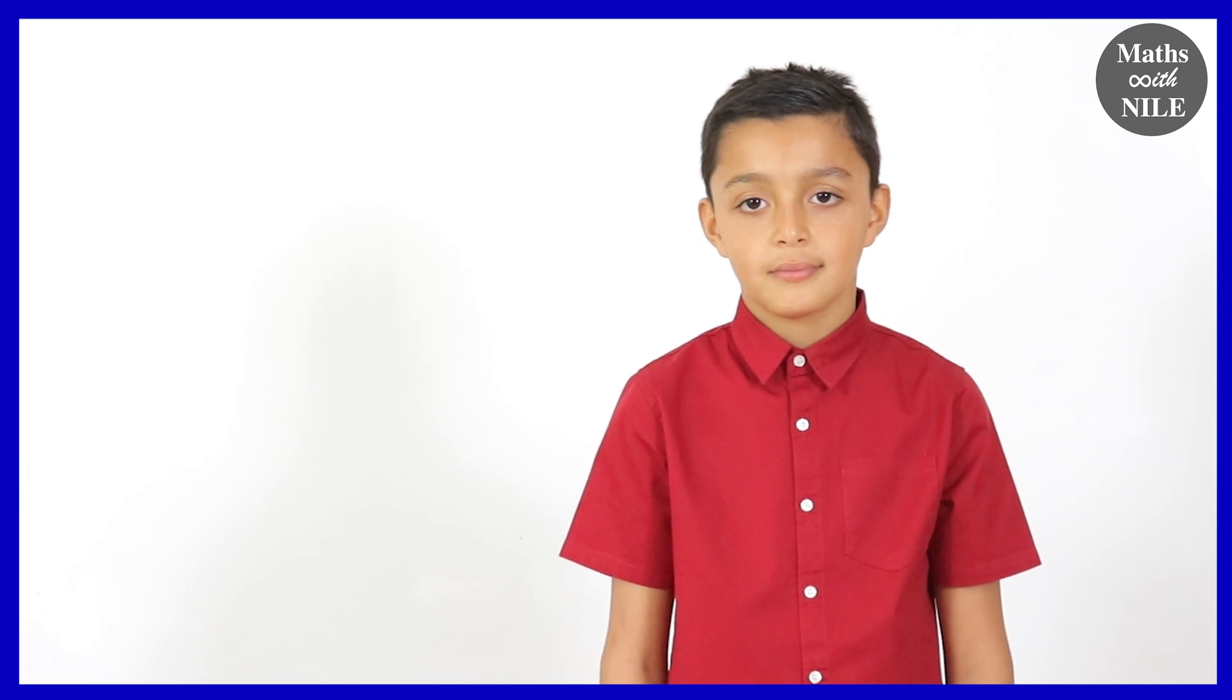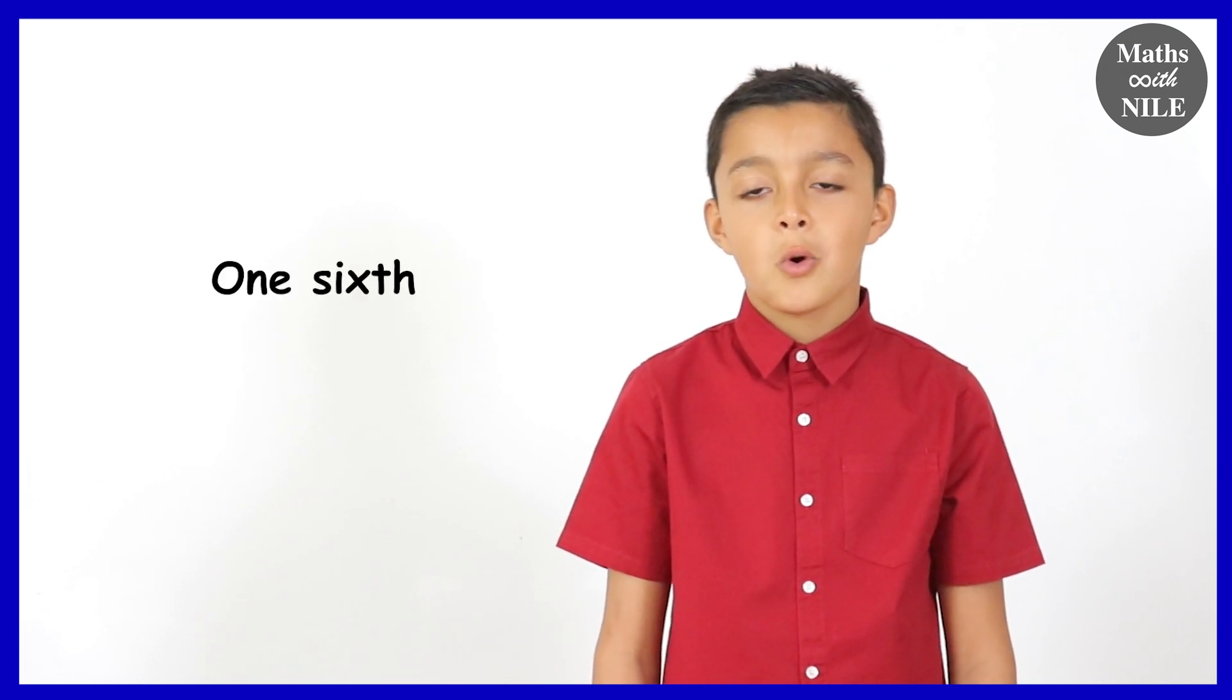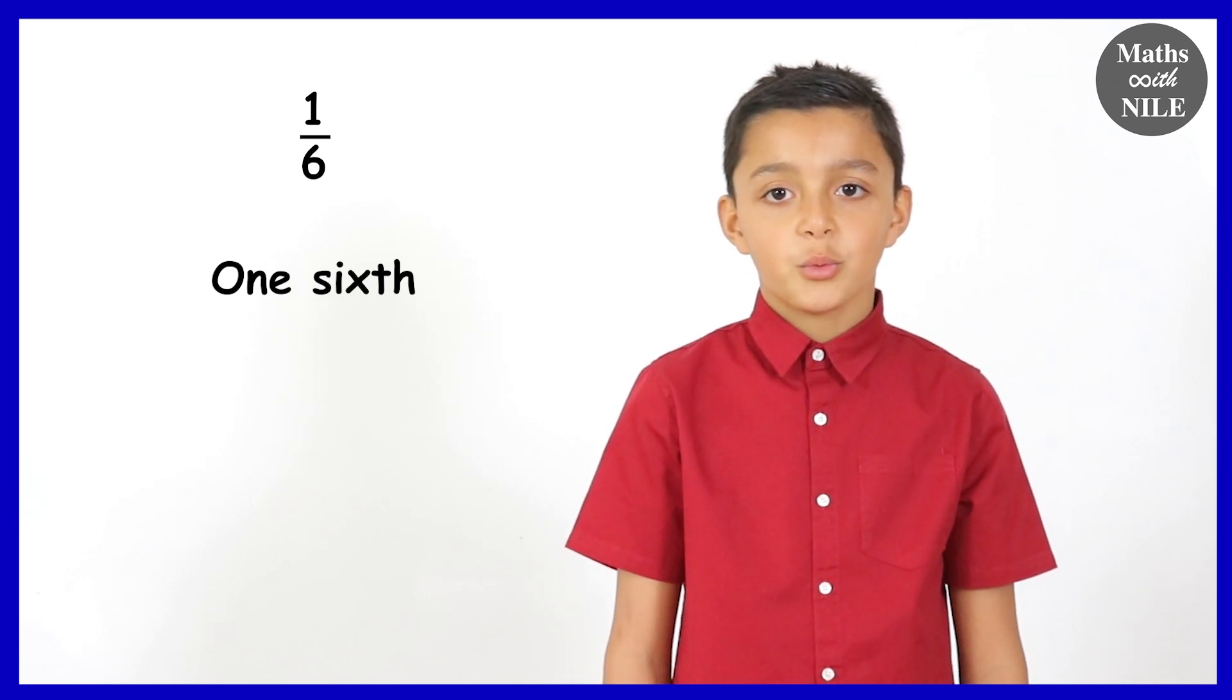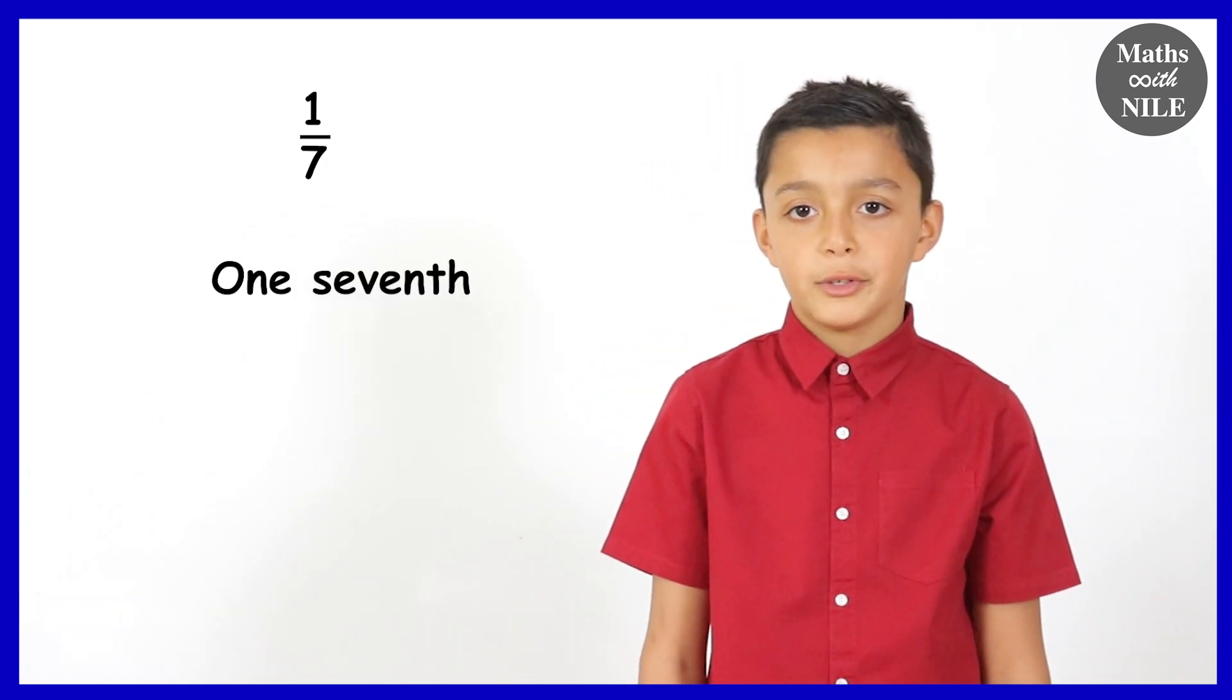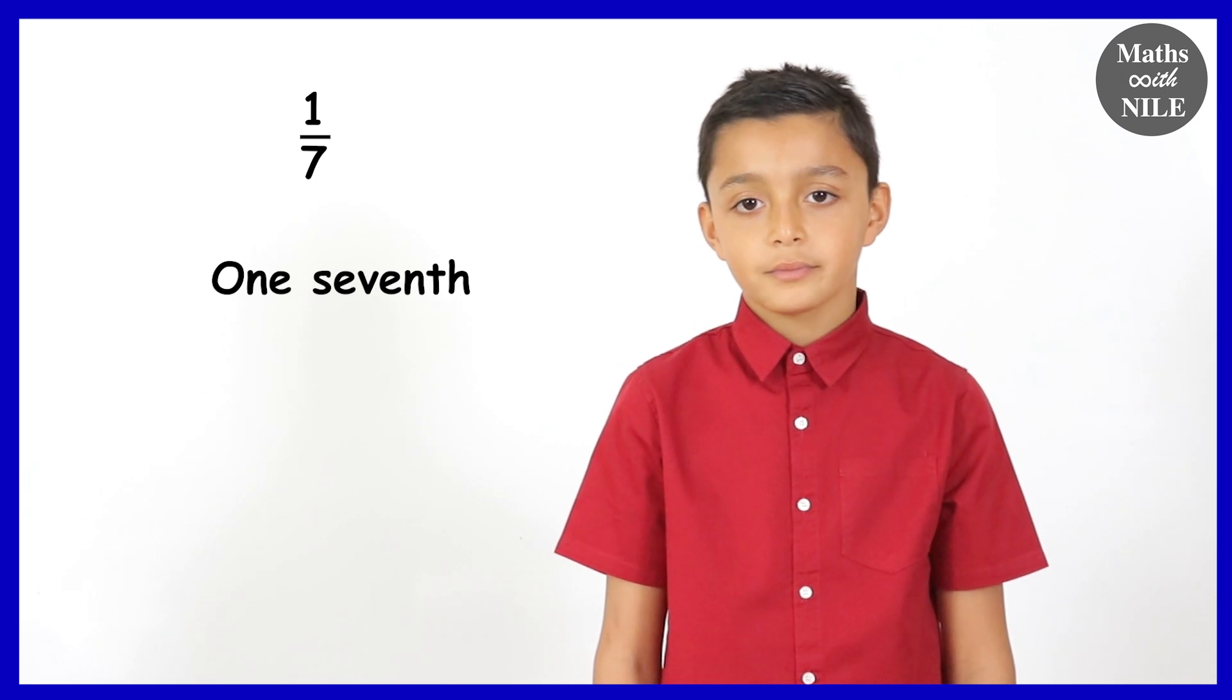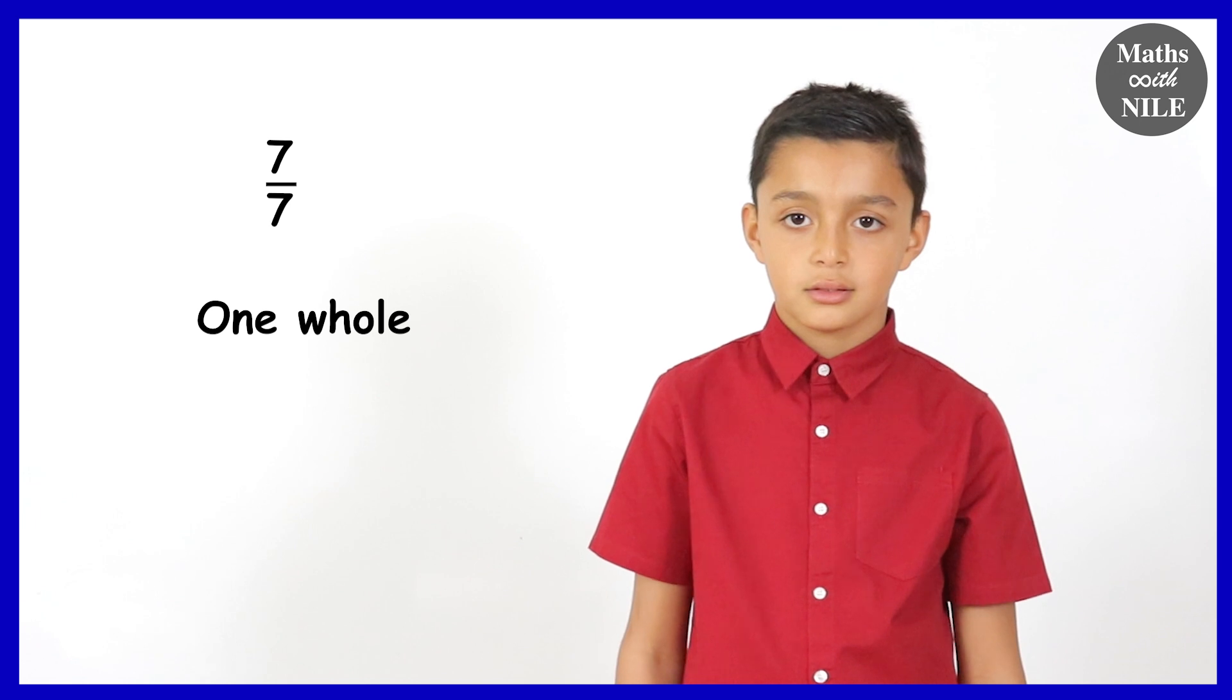Okay. What about one sixth? How do you write that? One over six. How do we get one sixth? We divide a whole into six equal parts. And how do we get one seventh? We divide a whole into seven equal parts. And how many sevenths give us one whole? Seven. Seven sevenths equal one whole. Good.